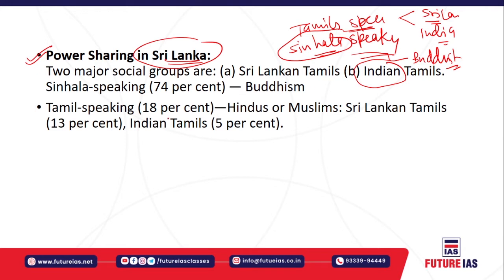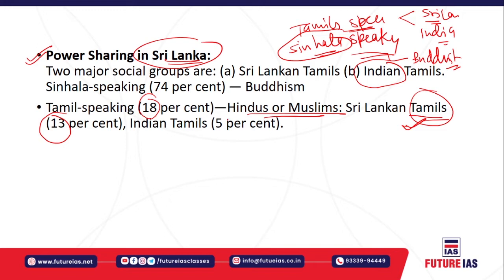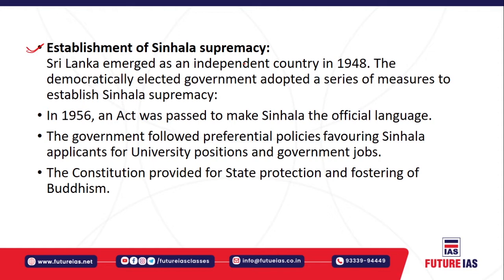The remaining around 26 percent are Tamil-speaking people, constituting about 18 percent of the population — who may be Hindu or Muslim. Sri Lankan Tamils constitute around 13 percent of the population and Indian Tamils around 5 percent. Tamil-speaking people altogether constitute around 18 to 20 percent of the Sri Lankan population.